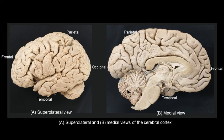The cerebellum being on the posterior side gives us a clue that this is the back end of the brain. So this would be our occipital lobe, and the frontal lobe is going to be to the front. You can also see the brain stem hanging down from the base of the brain.